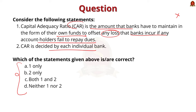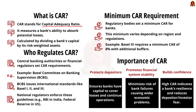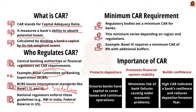Let's revise the basics about capital adequacy ratio. CAR or Capital Adequacy Ratio is the measure that ensures banks have enough capital to absorb potential losses. It is calculated by dividing the bank's capital by its risk-weighted assets. CAR is regulated by central banking authorities or financial regulators. For instance, the Basel Committee on Banking Supervision, which provides international standards known as Basel 1, Basel 2, and Basel 3, sets guidelines on CAR. These guidelines are adopted and enforced by national regulatory bodies like the Federal Reserve in the US or the Reserve Bank of India.